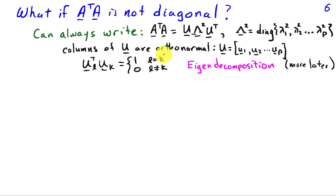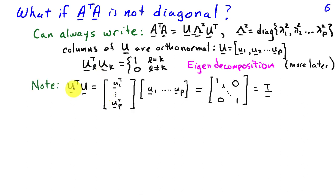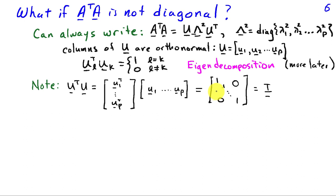Defining U by its columns u₁, u₂, ..., uₚ means uₗᵀ uₖ = 1 when l = k and 0 when l ≠ k. So each column has unit length and is orthogonal to all others. Looking at UᵀU, we get various terms uₗᵀuₖ: on the diagonal (l = k) we get 1s, and off-diagonal (l ≠ k) we get 0s. Therefore UᵀU equals the identity — U is a special matrix whose inverse equals its transpose.